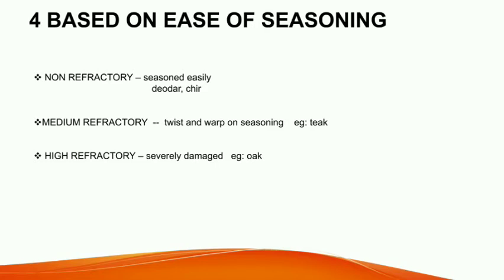Based on the ease of seasoning, timber can be classified as non-refractory, medium refractory, and high refractory. Non-refractory means it can be seasoned very easily — for example, deodar and chir. Medium refractory means they will twist and warp on seasoning — for example, teak. High refractory means they get severely damaged on seasoning — for example, oak.